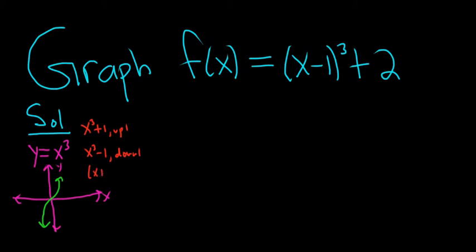And if you had something like x plus 1 quantity cubed, so in this case the 1 is next to the x, it's backwards. You think it's right, but no, it's actually left. So left 1.